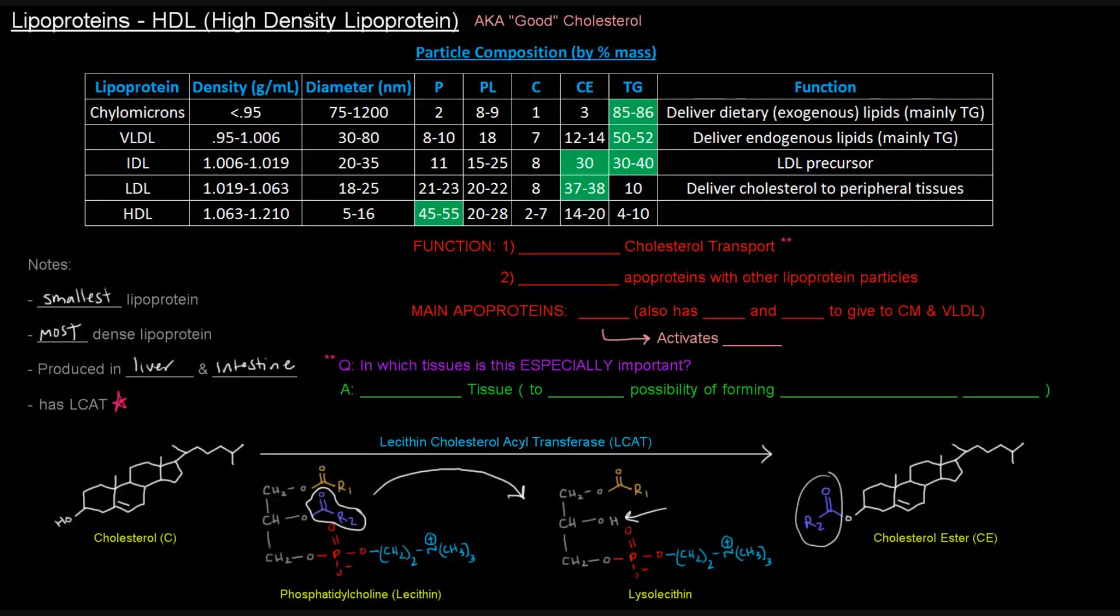And this is pretty important because HDL needs to take the cholesterols. Well, actually, before I even mention that, let's talk about the function of HDL. Its main function is reverse cholesterol transport, which basically means that it's going to take cholesterol from the peripheral tissues back to the liver. So why is LCAT important? Well, because if HDL takes up the cholesterol from the cells, it has to make sure that it doesn't lose them before it takes it back to the liver. So it takes the cholesterols up from the cells and converts them into these cholesterol esters so that they can't escape. And then it takes them back to the liver as cholesterol esters.